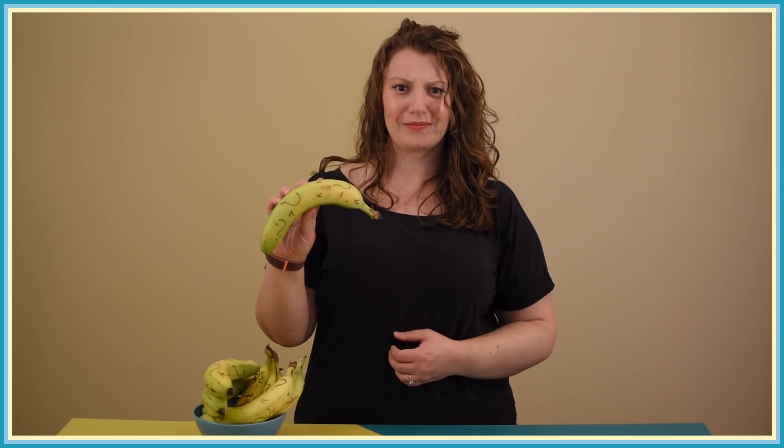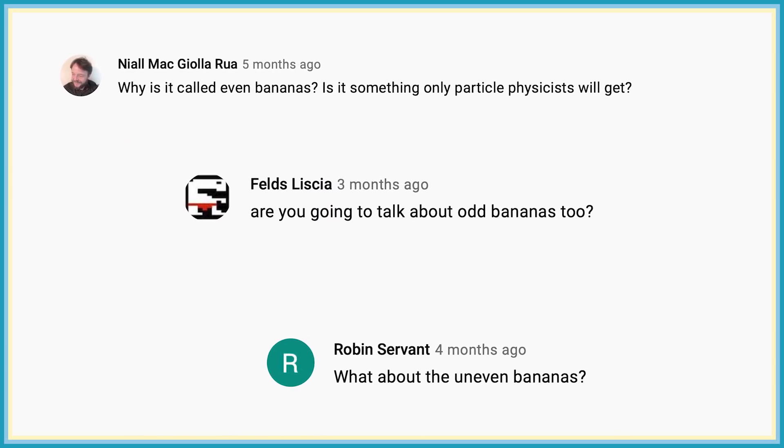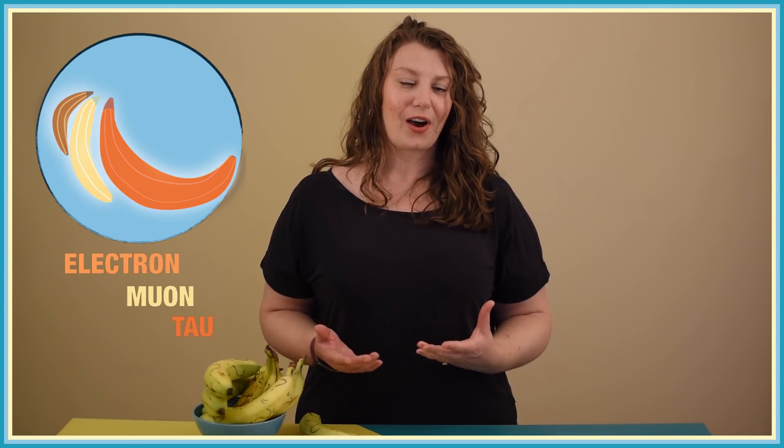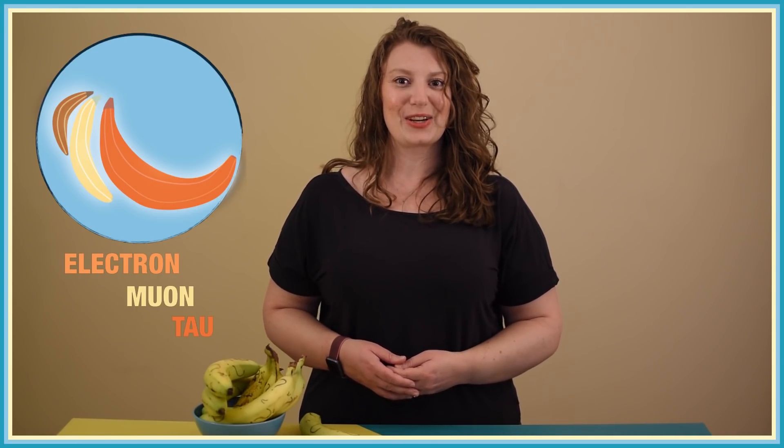My bananas are telling me it's time to answer your burning questions. A natural place to start is with the most common question we've received: why have an odd number of bananas in the Even Bananas logo? Lots of reasons — aesthetically, three is a magical beautiful number, it makes me laugh, but more importantly it symbolizes the three flavors of neutrino: electron, muon, and tau. Now let's get on to your science questions on this episode of Even Bananas.